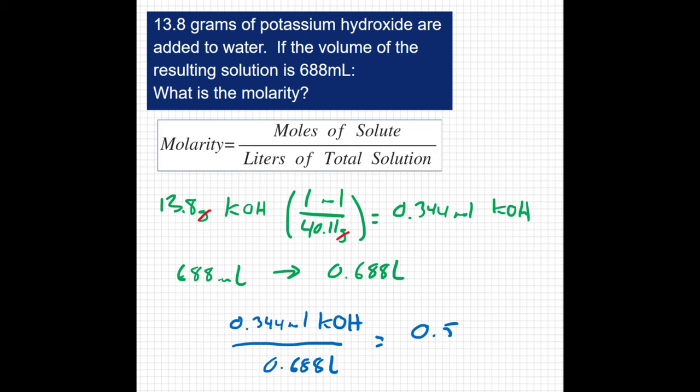Now 0.5 only has one sig fig, and if I look at my data, there are three sig figs, so I'm going to write 0.500 to give it three sig figs, and the units we use for molarity are a capital M.